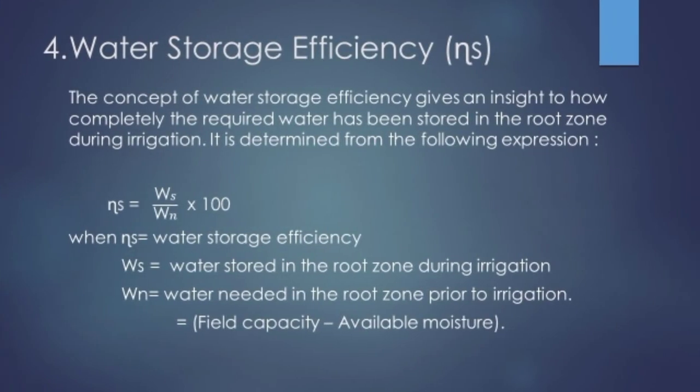The fourth is water storage efficiency — the ratio of water stored in the root zone to the water needed in the root zone prior to irrigation. WN represents the available moisture needed and WS is the actual water stored, showing how effectively water was stored in the root zone after irrigation.